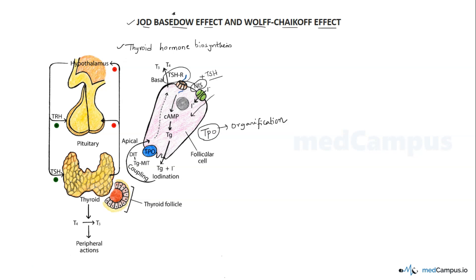This is followed by conversion of iodine to MIT and DIT — that is monoiodotyrosine and diiodotyrosine. We call this coupling. The coupling reaction is also catalyzed by the same enzyme, thyroperoxidase. MIT plus DIT couples to give rise to T3, and DIT plus DIT unites to form T4. So: entry, followed by organification, followed by coupling — these are the key steps in synthesis of thyroid hormone.